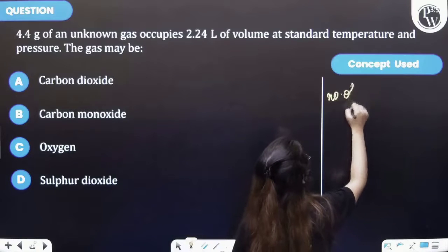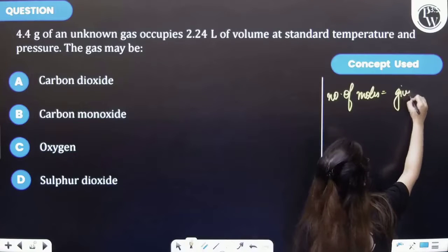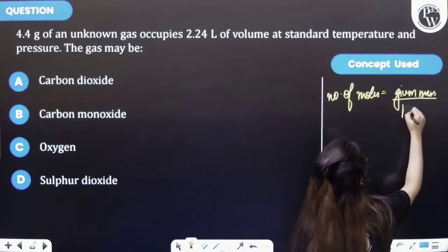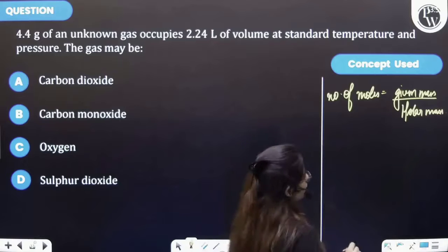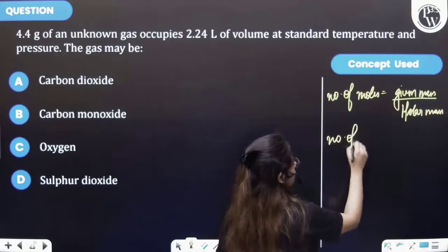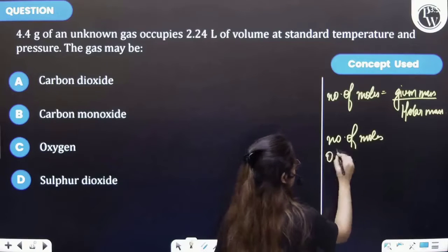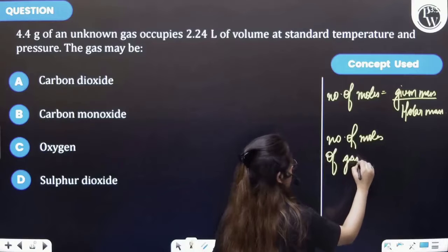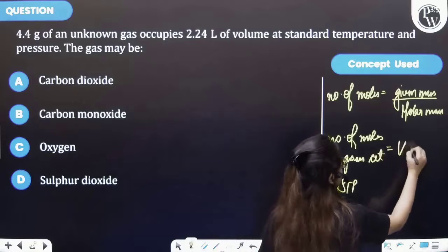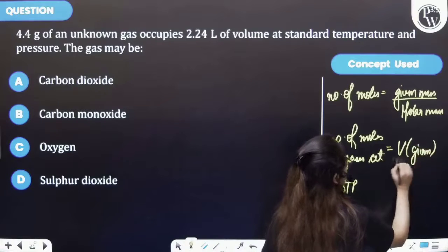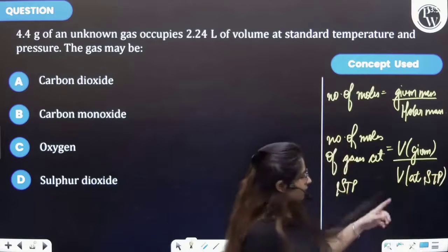Number of moles is equal to given mass upon molar mass. Also if I talk about the number of moles of gases at STP, this will be equal to volume given to you and the volume at STP. Remember this has to be in liters.